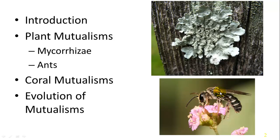Some other commonly cited mutualisms are lichens, which is a mutualistic relationship between cyanobacteria and fungi. And you have the mutualistic relationship between pollinators, such as bees and flying insects, and flowering plants.